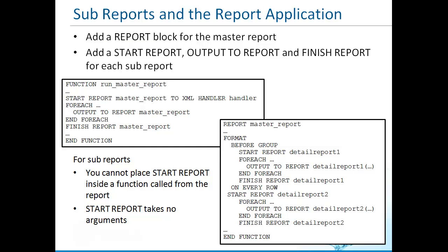The next step in the process is to update the report application to include a master report calling one or more sub-reports. In the master report block, you call the sub-reports with their own start report, output to report, and finish report statements. The start report statement must be in the master report block — it cannot be in a function called by the master report block — and it does not take any arguments. In the sample code shown here, you can see two sub-reports, detail report one and detail report two, each with their own start report, output to report, and finish report statements.